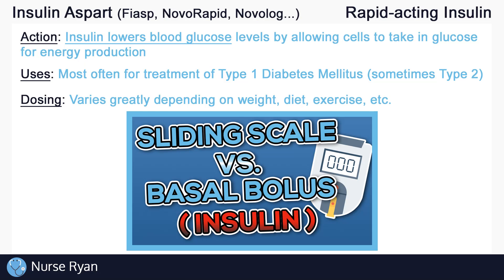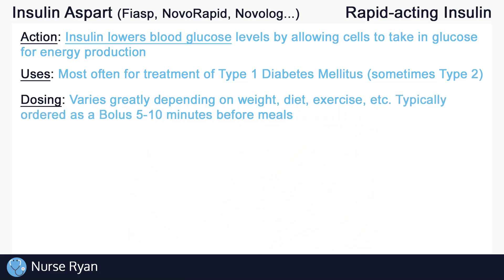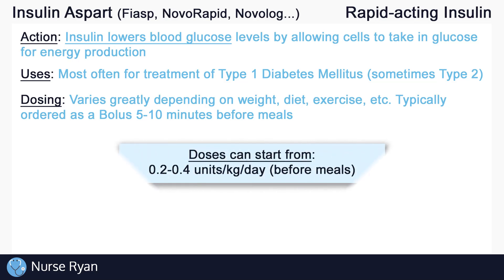I'll leave a link in the video description to my video on basal bolus and sliding scale orders — I really recommend reviewing that to get a good understanding on how to follow these orders and administer insulin correctly and on time. You'll typically see insulin aspart being ordered as a bolus order before meals. It is often given 5 to 10 minutes before meals due to its very rapid onset. It can also be given as a sliding scale order depending on the blood glucose level. Common starting doses can be between 0.2 to 0.4 units per kilogram of body weight per day, with that total amount split up and given before meals.